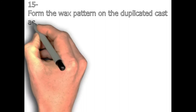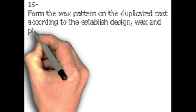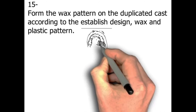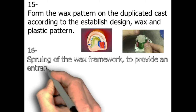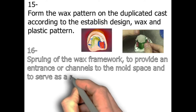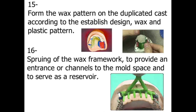Step number fifteen: form the wax pattern on the duplicated cast according to the established design, using wax and plastic pattern — that's a laboratory step, and the picture shows the wax pattern on the model. Step number sixteen: spruing of the wax framework to provide entrance channels to the mold space and to serve as a reservoir — that's a laboratory step.